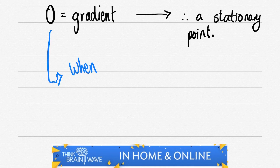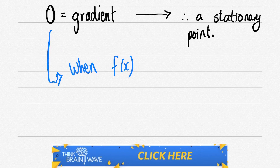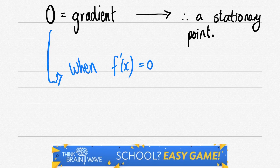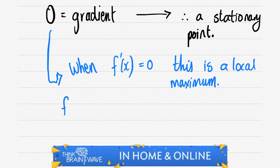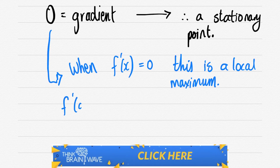When the function of x is taken as a derivative and that derivative is equal to zero, we call this a local maximum or a local minimum. In this case we will be looking at a local maximum.